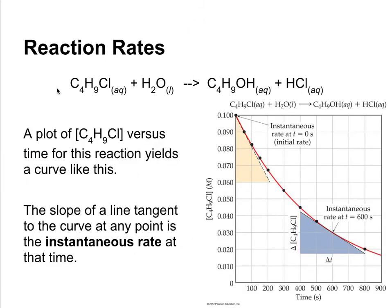This is what that data looks like when we graph it. As you can see, the reaction slows down significantly over time. The slope of a line tangent to the curve at any point is the instantaneous rate at that time. If we've got our concentration on the y-axis and time on the x-axis, if we take the slope of a tangent line to any of these points, that will tell us the instantaneous rate or the rate at that time for the reaction.